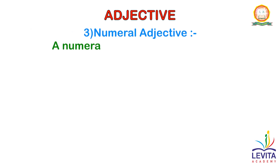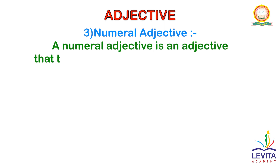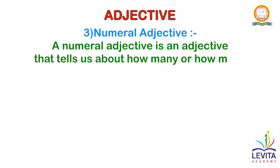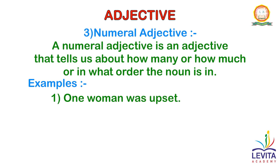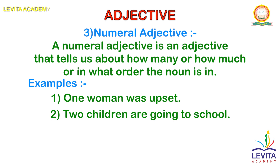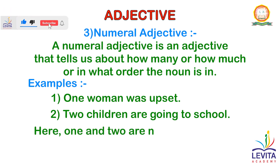A numeral adjective is an adjective that tells us about how many, how much, or in what order the noun is in. Examples are: One woman was upset. Two children are going to school. Here, one and two are numeral adjectives.